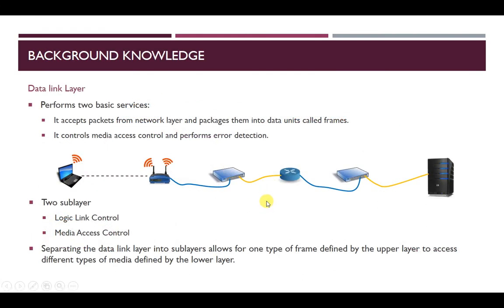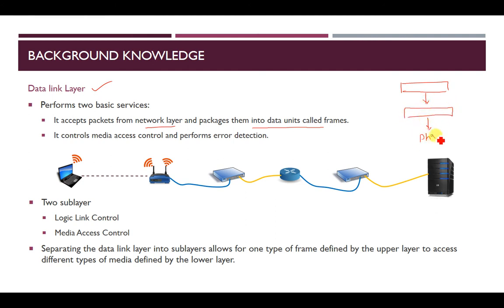Generally, the data link layer performs two operations. First, it accepts packets from the network layer and packages them into data units. The network layer passes packets down to the data link layer, and the data link layer converts them into frames before passing to the physical layer. So the packet becomes a frame when it goes to the physical layer.